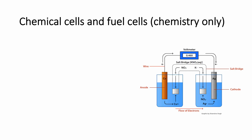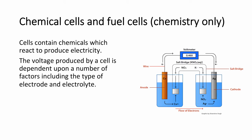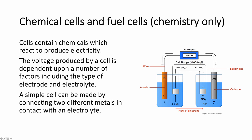Chemical cells and fuel cells, and this is for students of chemistry only, so trilogy students don't need to know this. Cells contain chemicals which react to produce electricity. The voltage produced by a cell is dependent on several factors, including what the electrodes are made from, what the electrolyte is made from, and the relative potential differences between both half cells. A simple cell can be made by connecting two different metals in contact with electrolyte. For example, I have copper metal in a solution of its 2+ ions, and silver metal in a solution of its 1+ ions connected together by a high resistance voltmeter. The circuit is complete with some filter paper soaked in potassium nitrate called a salt bridge.